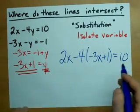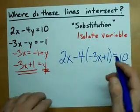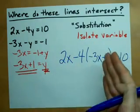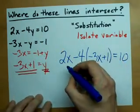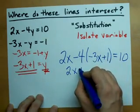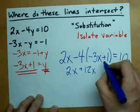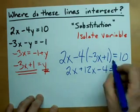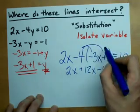Now I think you'll find if you multiply all this out, collect your like terms and solve for X, you'll get a number. Only one way to find out. 2X plus 12X minus 4 equals 10. See how I multiplied the negative 4 through the brackets?